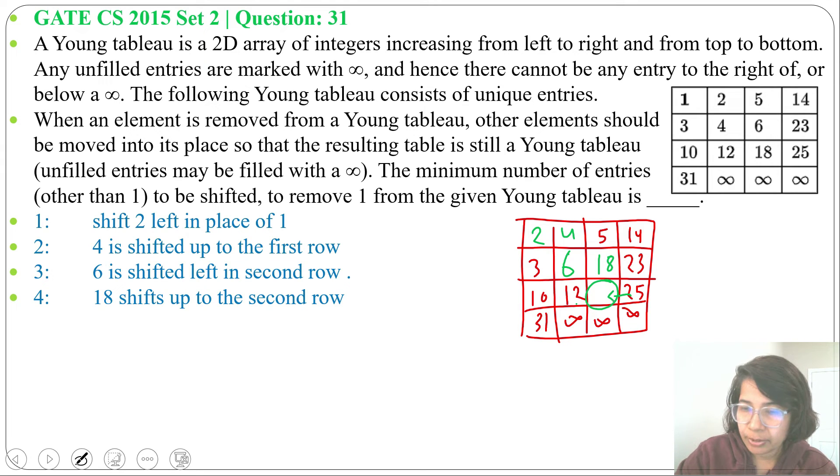We can move 25 to the left. After moving 25 to the left, we can add infinity here. So now check further. It's still a Young tableau: 2, 4, 5, 14 is in increasing order.